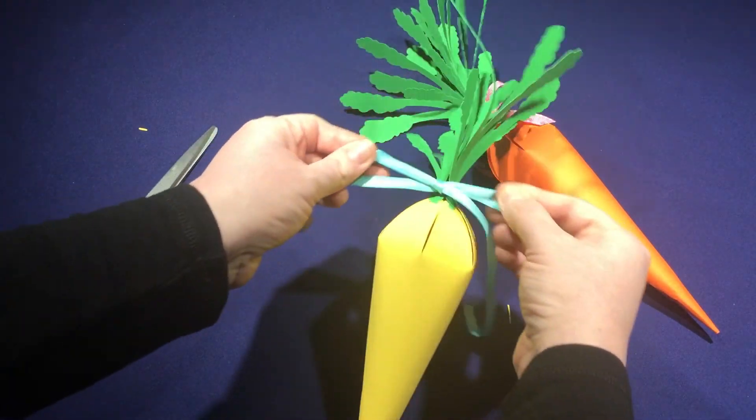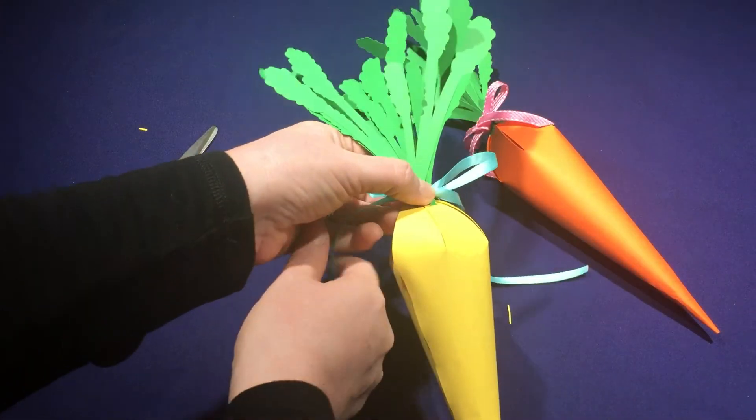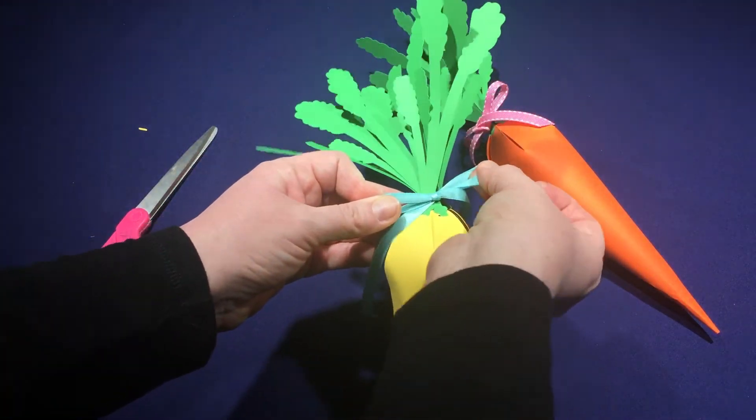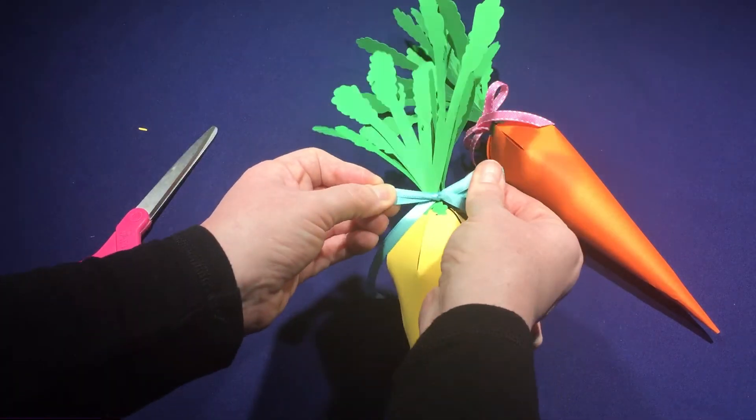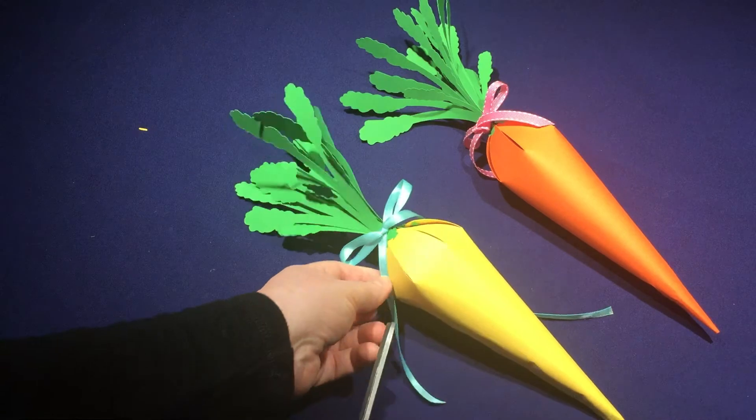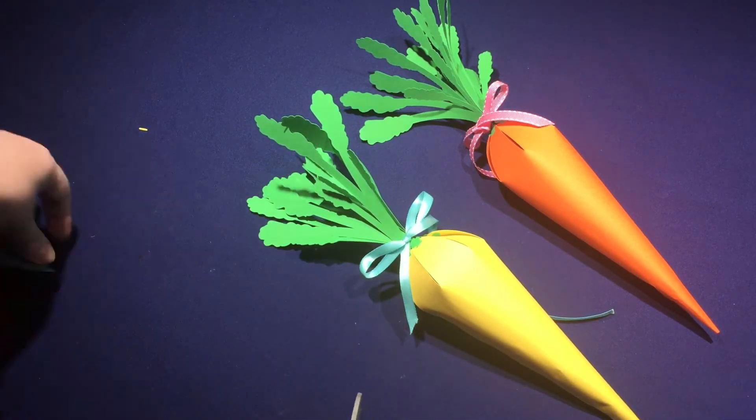I tie a knot first and then make the bow. However you make a bow is perfectly fine. I like to pull my ends down a little to get a nice shape, and then I just use the scissors to trim off my ends.